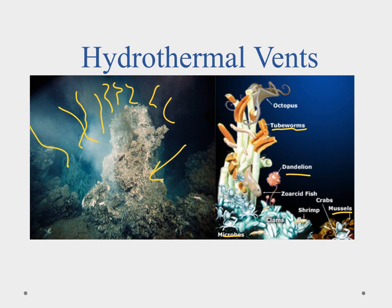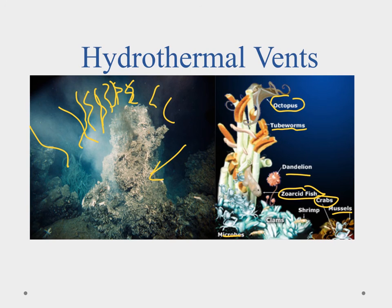Once we have this base layer of chemosynthetic energy, we start seeing advanced predators like zoarcid fishes, crabs, and octopus. Entire ecosystems exist at the bottom of the ocean, feeding off these black smoker vents. The bacteria take superheated hydrogen sulfide water and convert it into sugar, which is how this whole life system at the bottom of the ocean gets going.